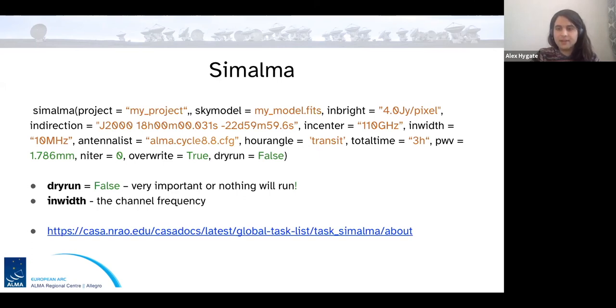Then set a total time of observation. And this again will come out of the observing tool. And this is the on source time again, and not the time including overheads. Then you select the precipitable water vapor. And this is again, comes straight out of the OT when you input your desired spectral setup. And then you can control Tclean. So in this example, I've set zero clean iterations, but you can choose more. One very important thing to note is that if you set, don't set dry run equals to false, SimAlma will do a number of calculations and output nothing for you. So if you want to actually simulate, you should always choose dry run equals false.